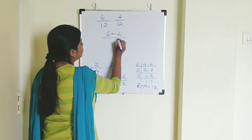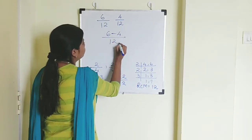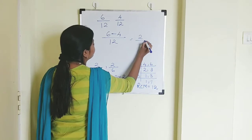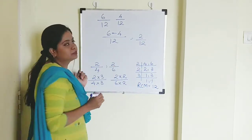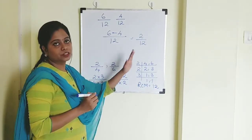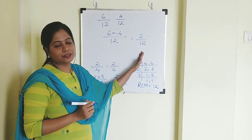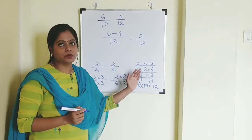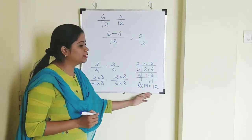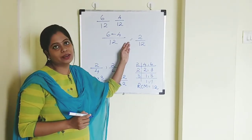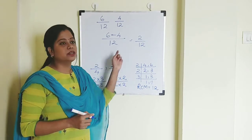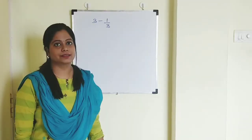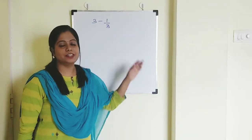So 6 minus 4 by 12 equals 2 upon 12. That is the answer for this subtraction sum. When you get two different denominators, you find the LCM and proceed with the steps. Now we'll see one more example involving a mixed fraction.